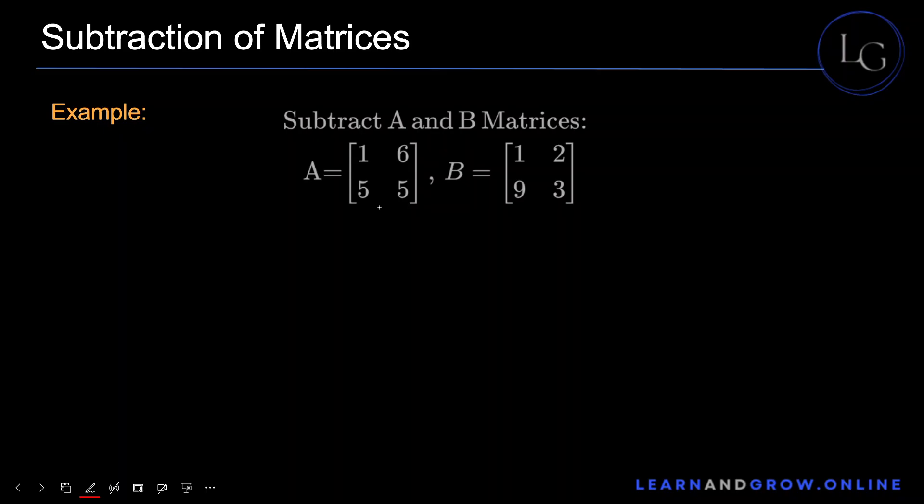See this example here. We have to subtract A and B. Let's first see - the order of A is 2 by 2, 2 rows and 2 columns. The order of B is also 2 by 2, so they can be subtracted from one another.